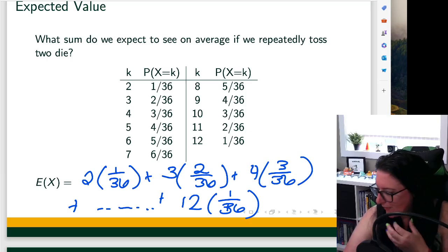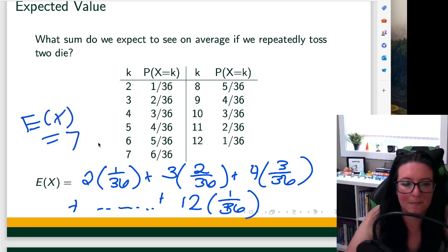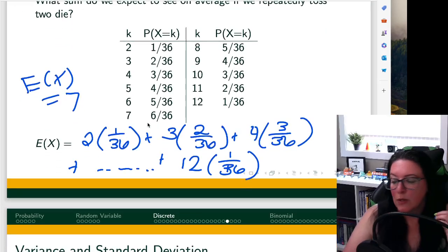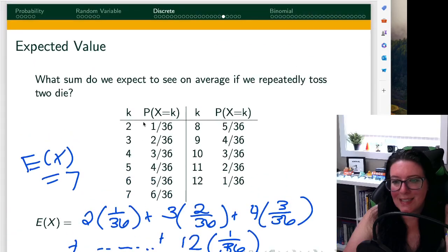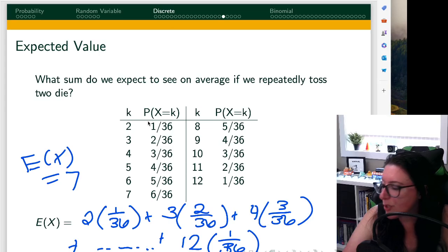And in this case, if I run through that whole thing, I end up with an expected value of about seven.